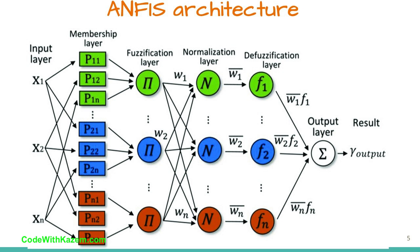The fourth layer takes as input the normalized values and the consequence parameter set. The values returned by this layer are the defuzzified ones and those values are passed to the last layer to return the final output.